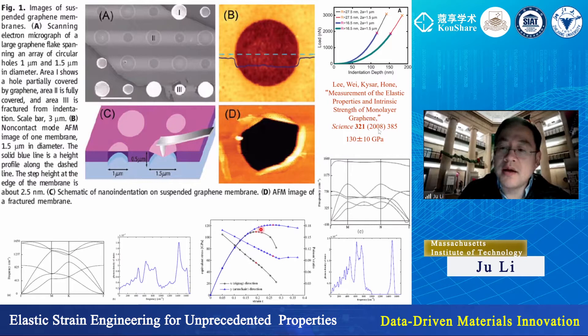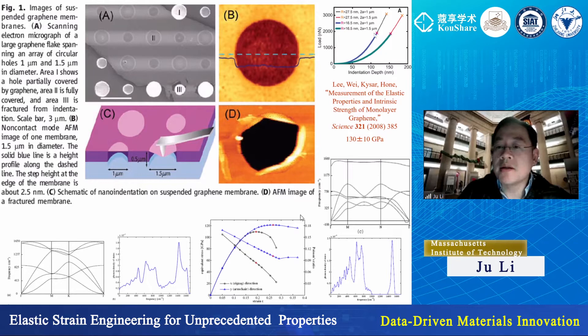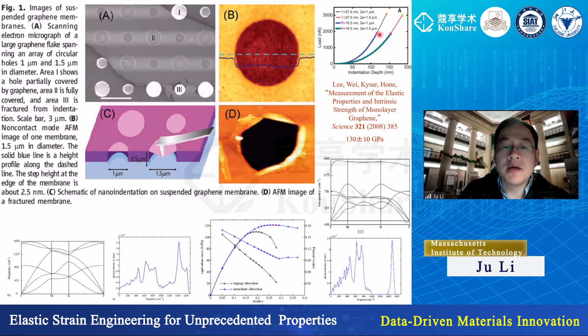A year later, Professor Jane Hong at Columbia performed an experiment where they put monolayer graphene on a hole 1 to 1.5 microns across, and used different indenter tips to poke it until it fails. They found two things: first, they needed a nonlinear elastic constitutive relation to fit the load-displacement curve; and second, right at the point of fracture, the strain and stress under the tip corresponds to 130 gigapascal.